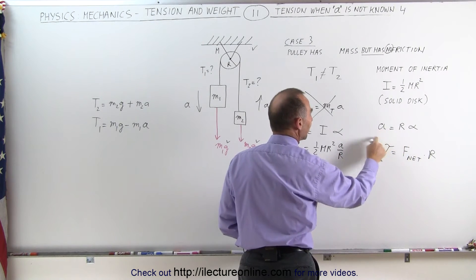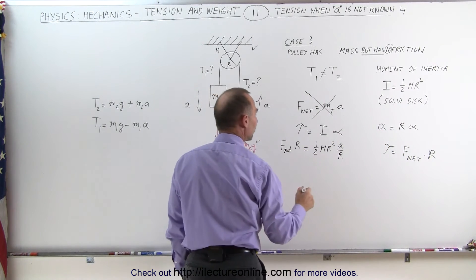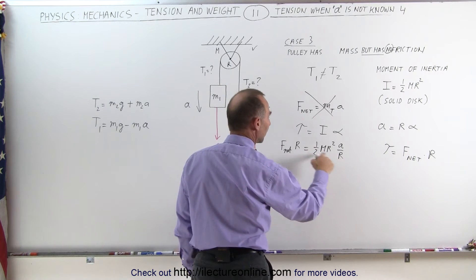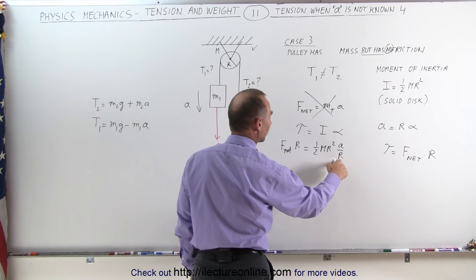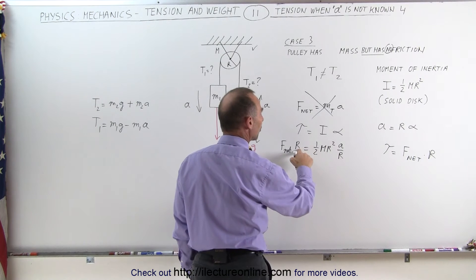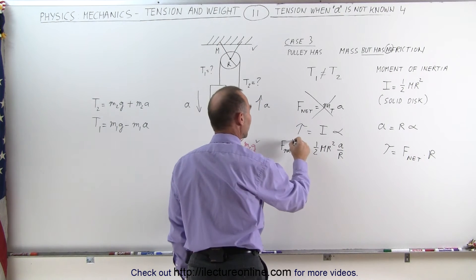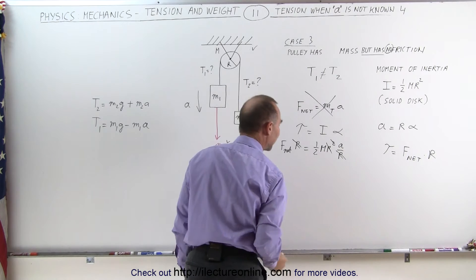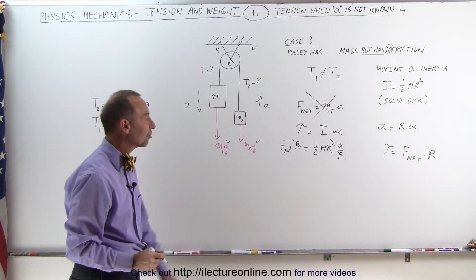So if we solve for alpha we get A divided by R. And notice that we have an R here and an R here in the denominator. So this can come up here that makes that R squared and then R's will cancel out. So this R cancels out one of these R's and this R cancels out that R right there. That makes it a little bit easier.